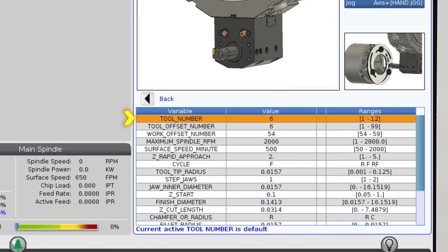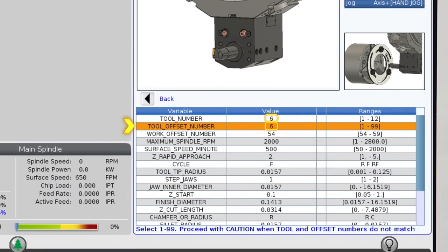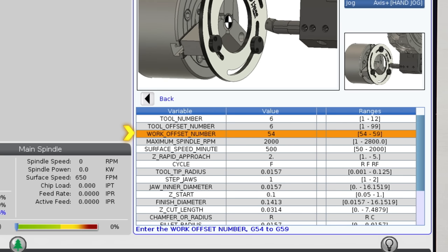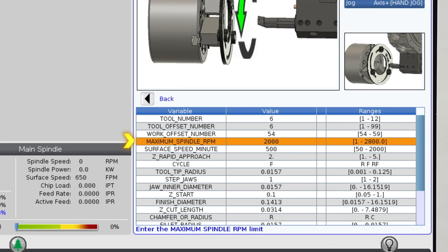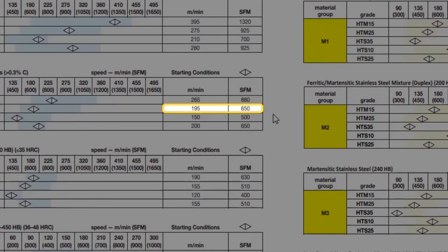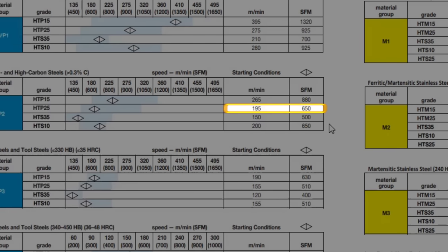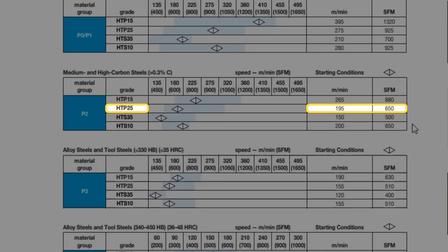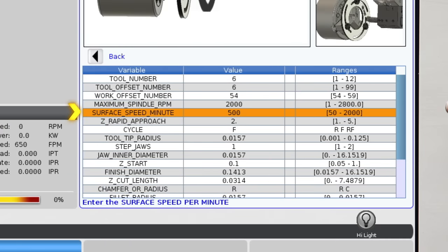First, we have our standard tool questions. I'll leave the tool number and offset at the current turret position. I'm also going to leave the work offset and maximum spindle RPM at their defaults of G54 and S2000. Now, I need to refer to the speed and feed chart and you can see 650 surface feet per minute or 195 meters per minute is recommended for the HTP25 grid we have. So I'll enter that here.